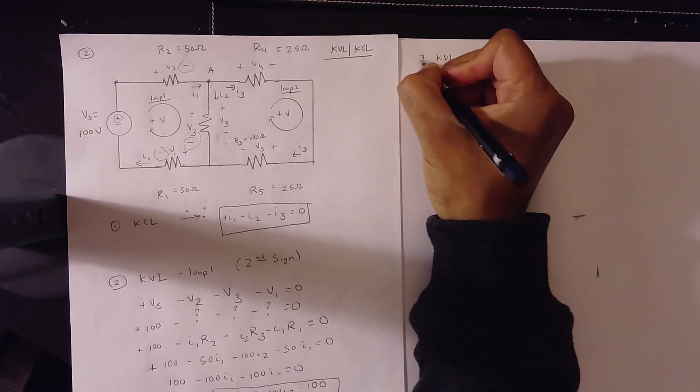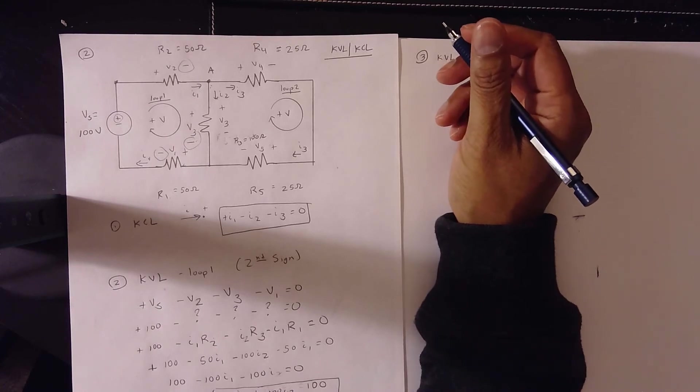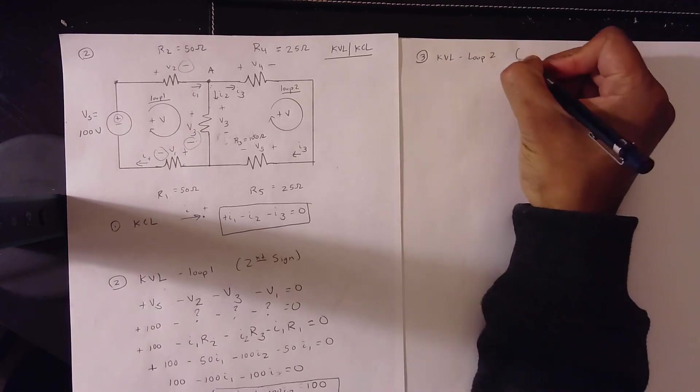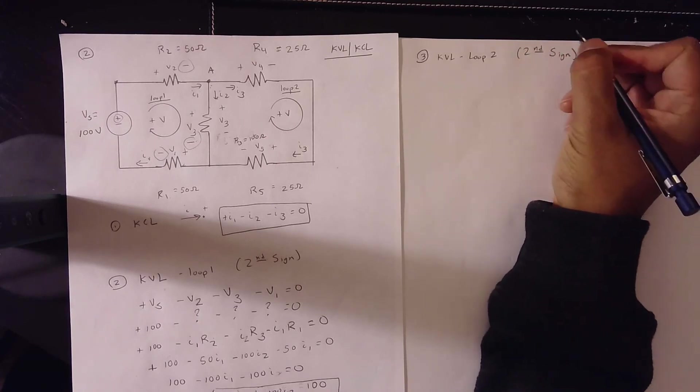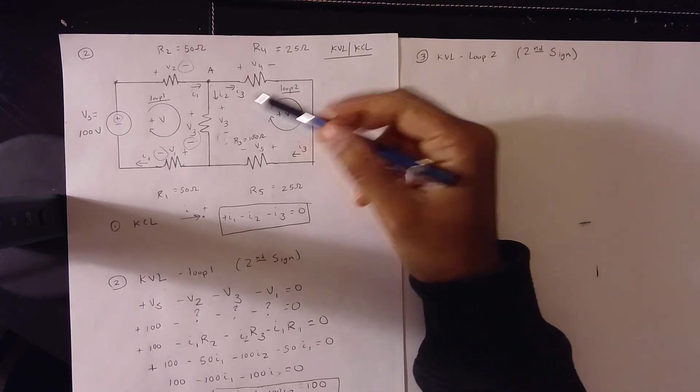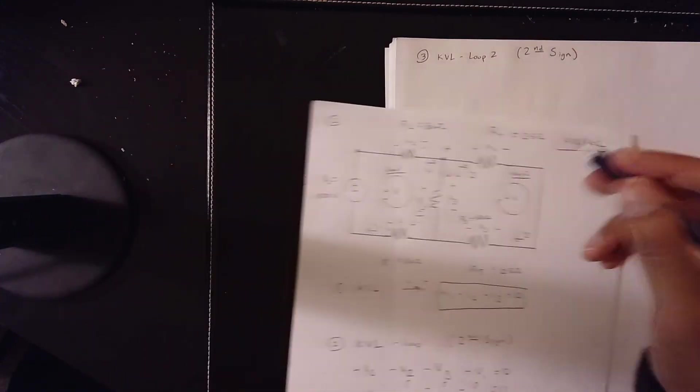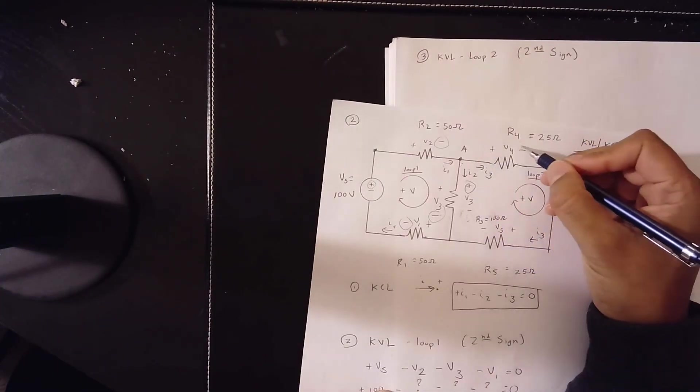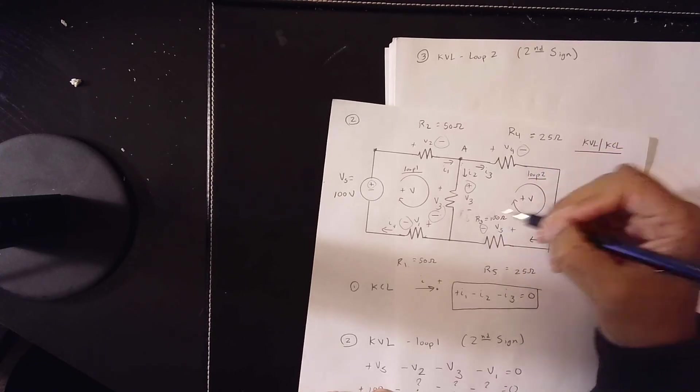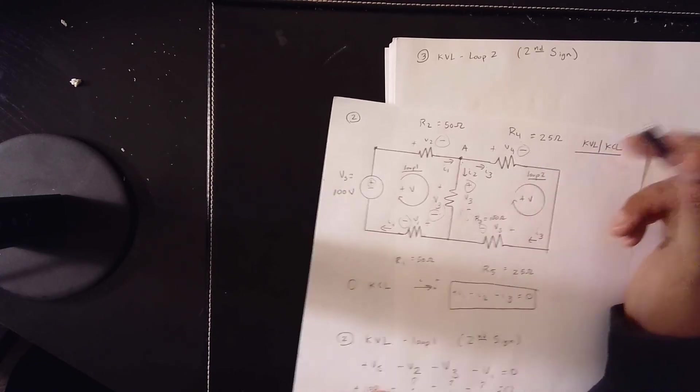Second sign convention. When we use the second sign convention, we go around with the second sign. Plus V3. We go around here. This is the direction we travel. So second sign of the direction of travel.